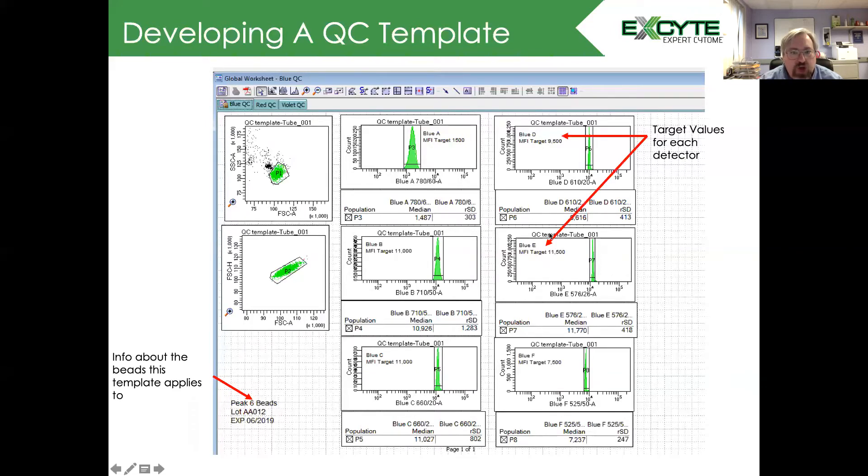You're going to indicate the target values for each of the different values that you're going to be measuring. In this case, we're looking at the median fluorescence intensity of different channels. We've drawn gates around those.